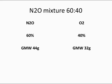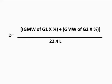The gram molecular weight of nitrous oxide is 44 grams, and the gram molecular weight of oxygen is 32 grams. So we're going to plug this into the equation again to find our density of a nitrous oxide mixture of 60-40.